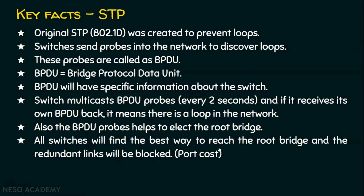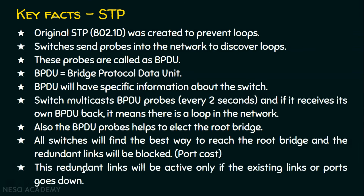All switches will find the best way to reach the root bridge. In a network, one switch will be elected as the root bridge, and all other switches will find the best way to reach it. After finding the best way, other paths are blocked. The redundant links will be blocked and used only when needed. The best path to the root bridge is decided based on port cost, which we will cover shortly.